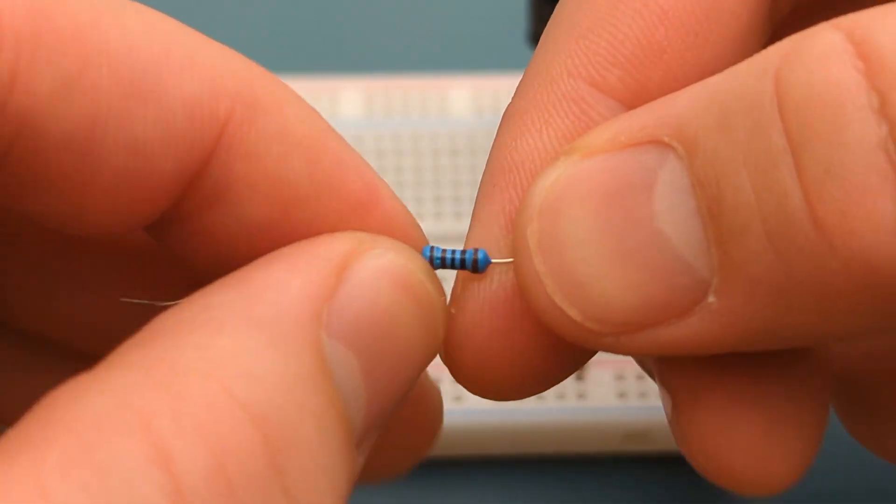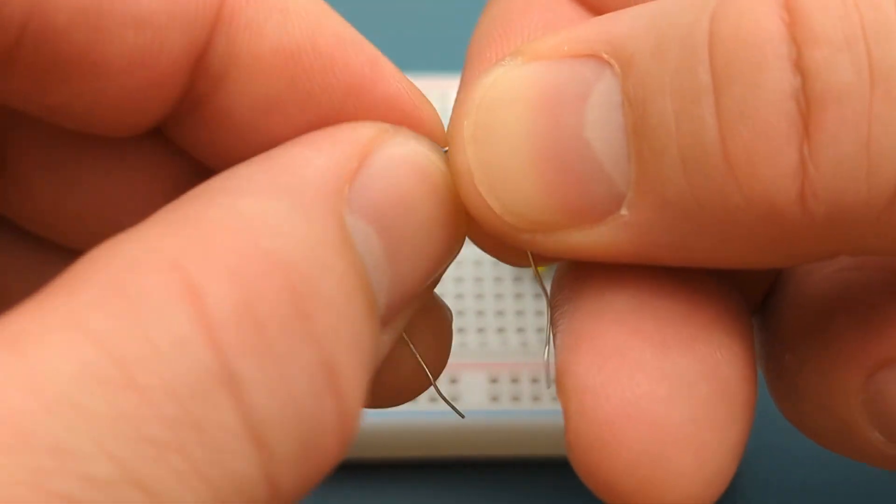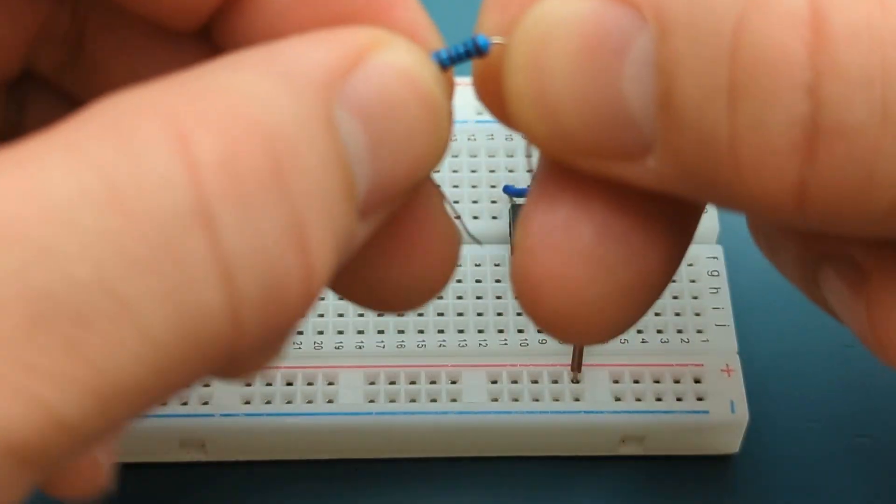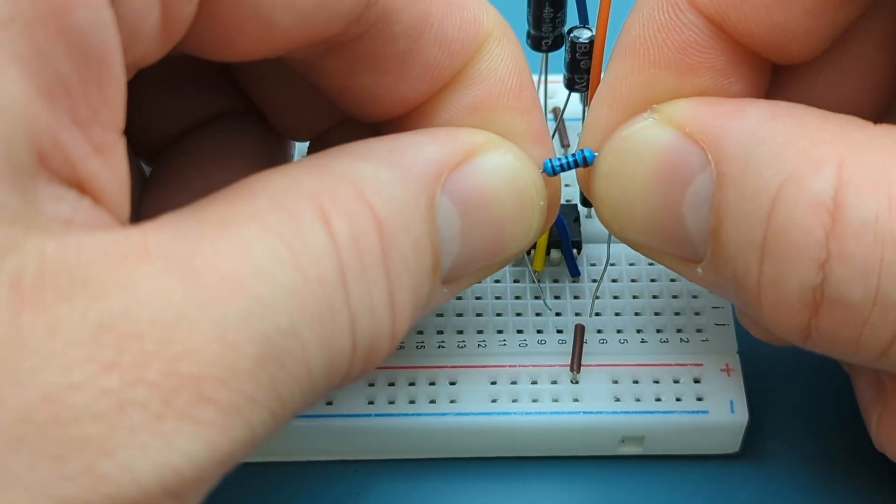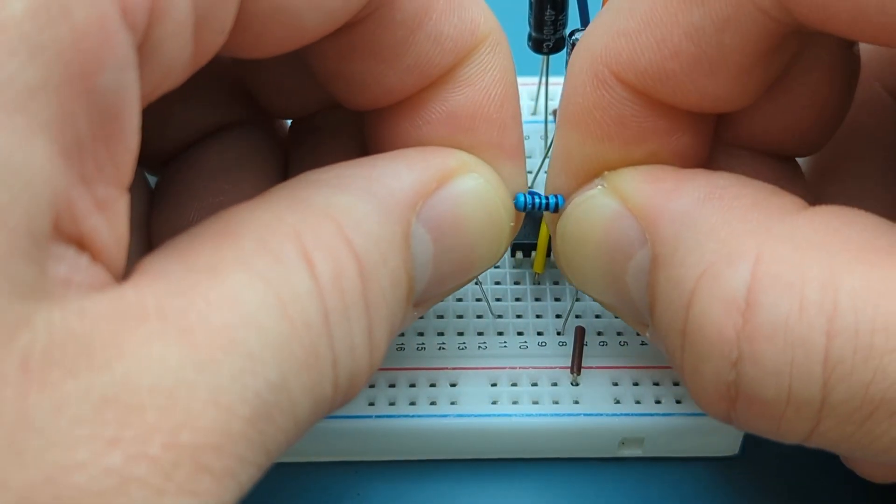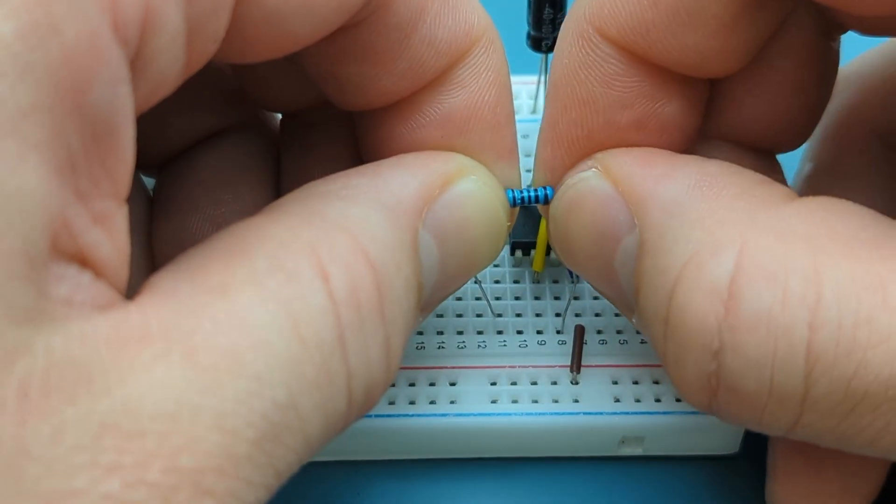Bend the ends of a 1000 ohms resistor. Insert the 1000 ohms resistor into pin 6 or threshold and pin 7 or discharge.